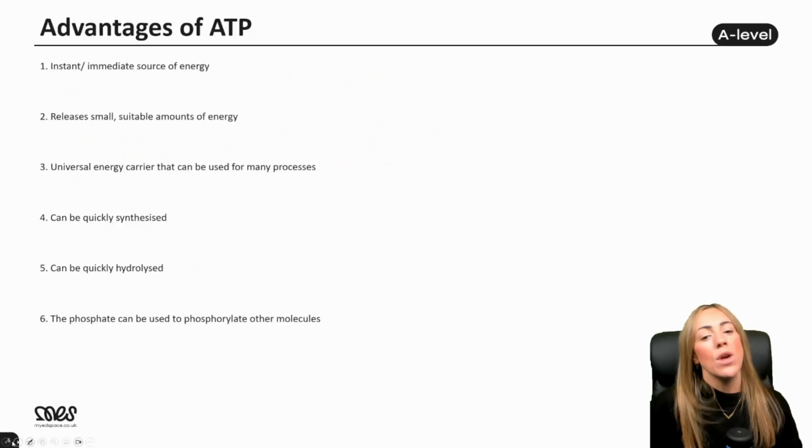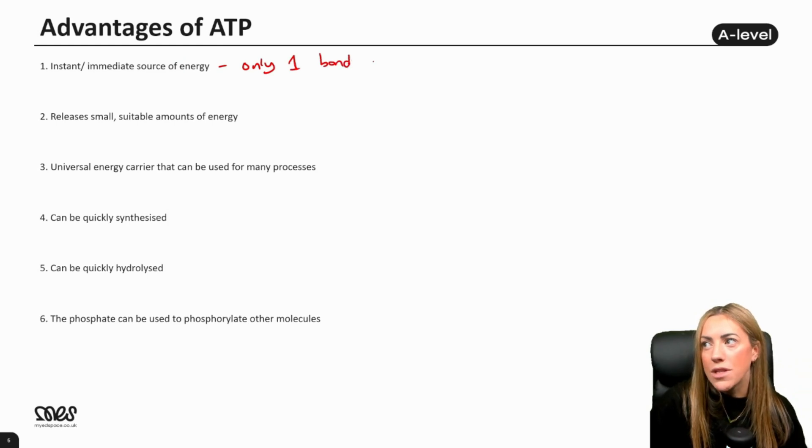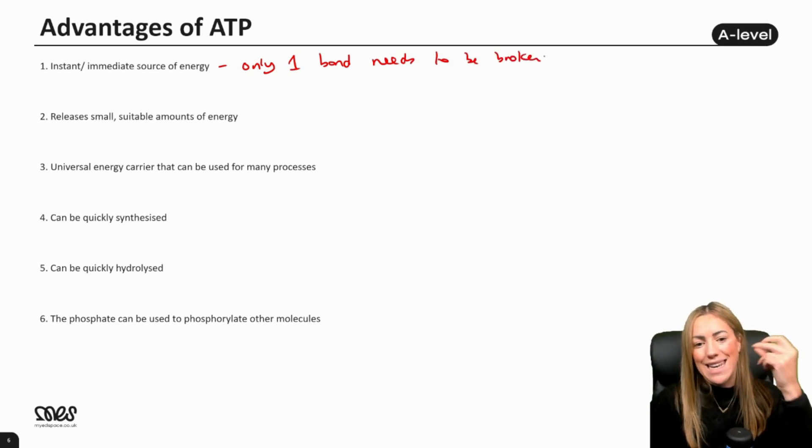The last thing we're going to do is consider some of the advantages of ATP. Why do we use ATP to release energy? One of the things we can say is it's an instant or immediate source of energy. It's a quick release of energy because only one bond needs to be broken. We just have to hydrolyze one bond and you get an instant or immediate release of energy.